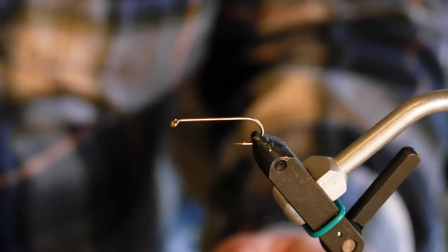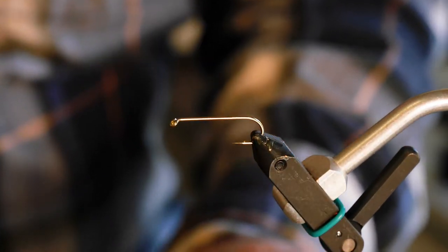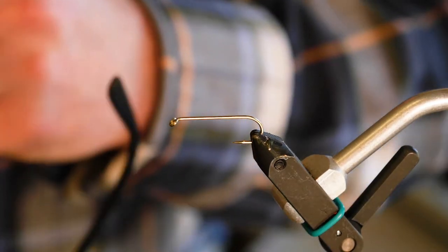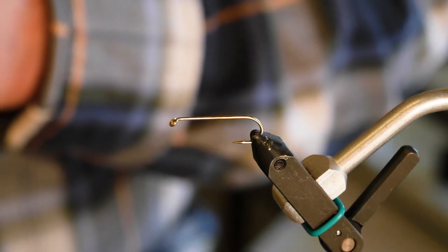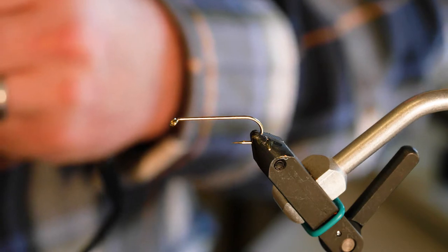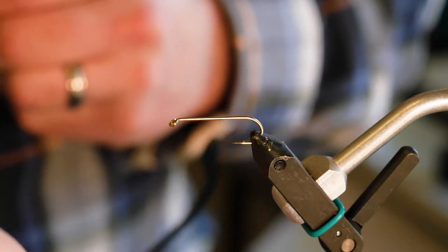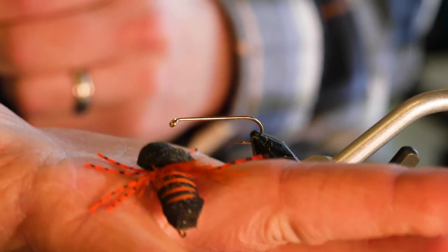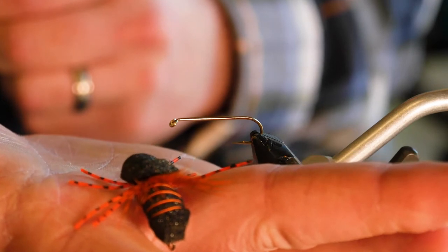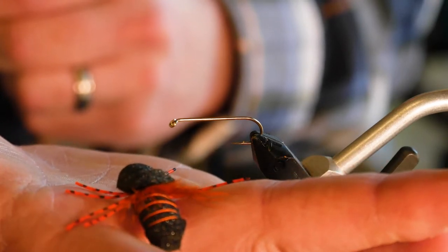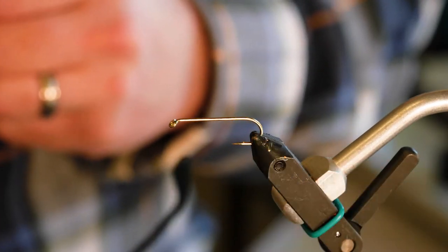All right, today we're going to tie a 17-year cicada fly. It's the periodic cicada, 17-year cicada, whatever you want to call it. It's a very simple fly.